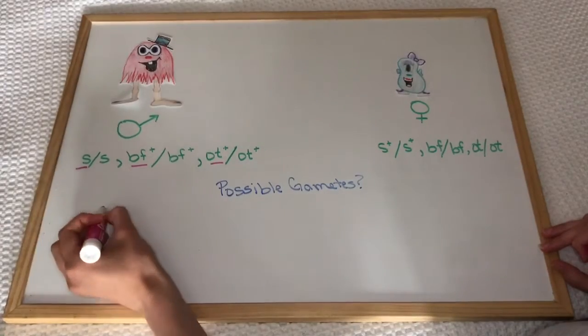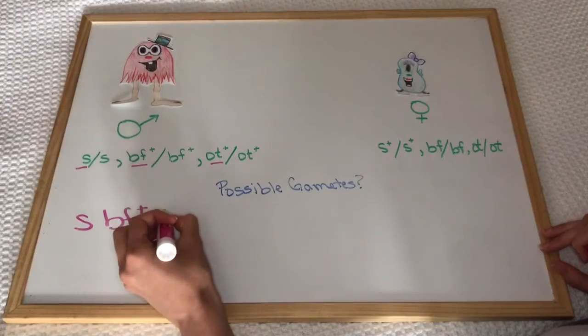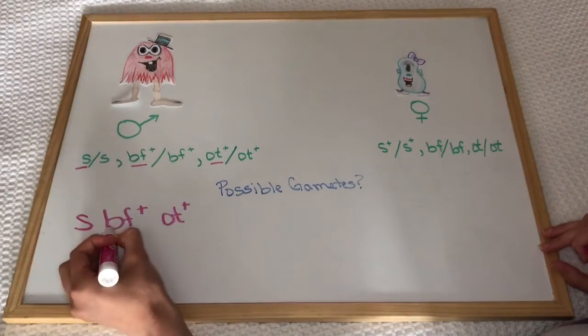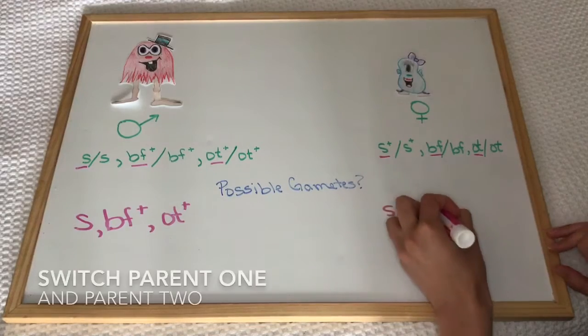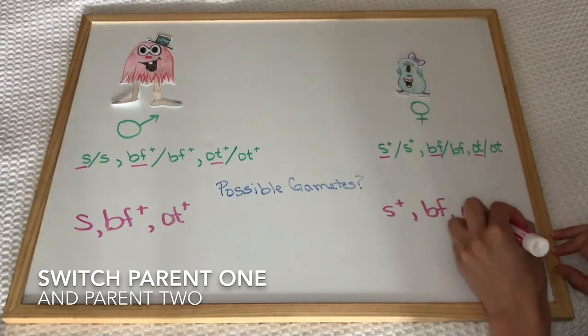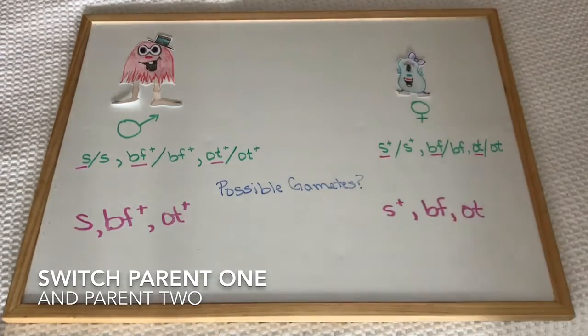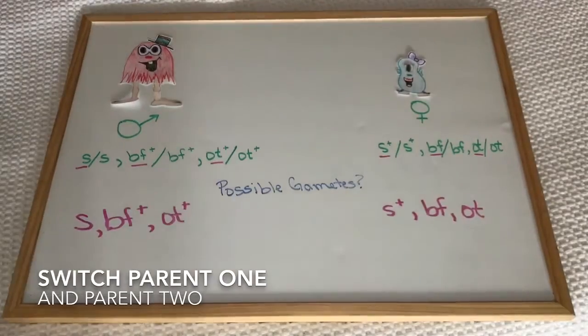We have to list all the possible gametes that could have been donated by each parent. I made this example really easy and both parents can only donate one possible gamete each. For parent one, the gamete is S dominant, BF, and OT. For parent two, the gamete is S, BF dominant, and OT dominant. This is because both parents are homozygous for all three traits. If the parents were heterozygous for any or all of the traits, more gametes could be possible.